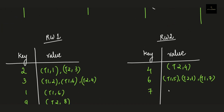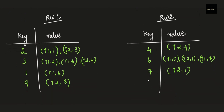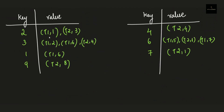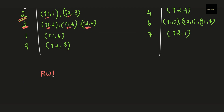In the next step, we convert the key-value pairs back into the original table format with attributes A, B, and C after joining. The key (B) is placed under the B attribute. For each value tuple, T1 belongs to table 1 which contains attribute A, and T2 values go under the C attribute. For example, key 2 with values (T1,1) and (T2,3) produces a record with B=2, A=1, C=3.